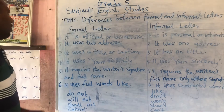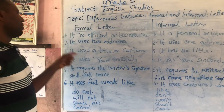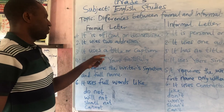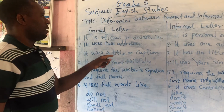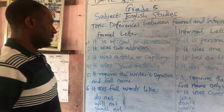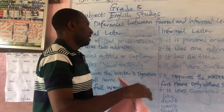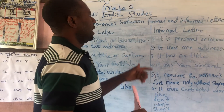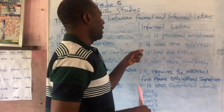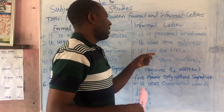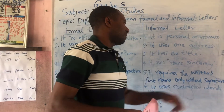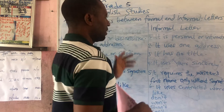Number three: a formal letter uses a title or caption — that is, a heading. An informal letter does not have any title; it has no title.